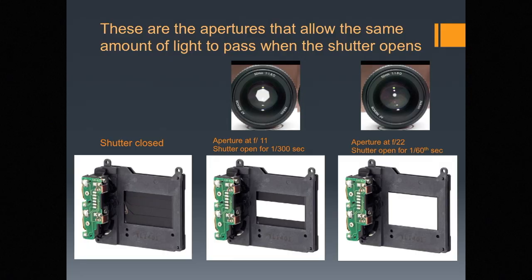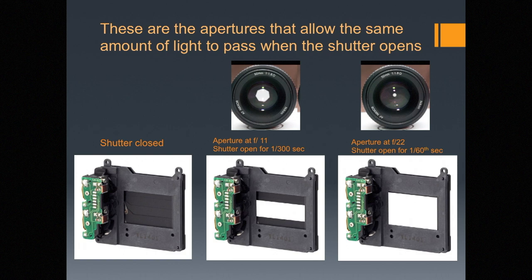These are the apertures that allow the same amount of light to pass when the shutter opens. An aperture of f11 with a shutter open for a three-hundredth of a second, versus f22 with the shutter open for a sixtieth of a second — both let in the same amount of light, but the characteristics are different. You are looking for the right balance of aperture to shutter speed, because different combinations will let in the same amount of light but change the character of the photo.